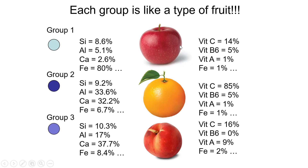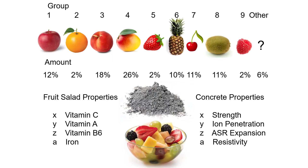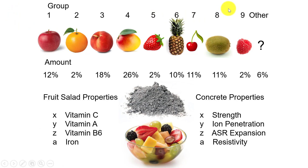Just like an apple has different amounts of vitamin C, B6, vitamin A, iron, etc. — each group is like a different fruit. So if I was going to make fruit salad and I had different amounts of apples, oranges, etc., I would get a certain amount of properties out of that fruit salad: a certain amount of vitamin C, vitamin A, iron, etc. The same thing happens with fly ash. If I have different groups — one, two, whatever, all the way up to nine — depending on the percentages I have of each one, they're going to give me concrete with different properties.